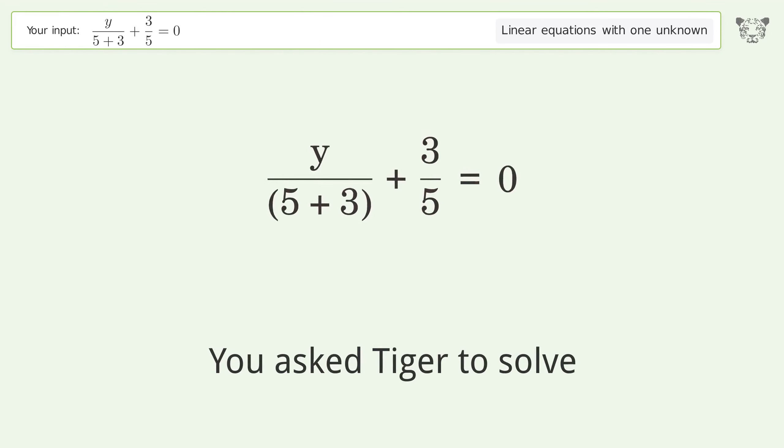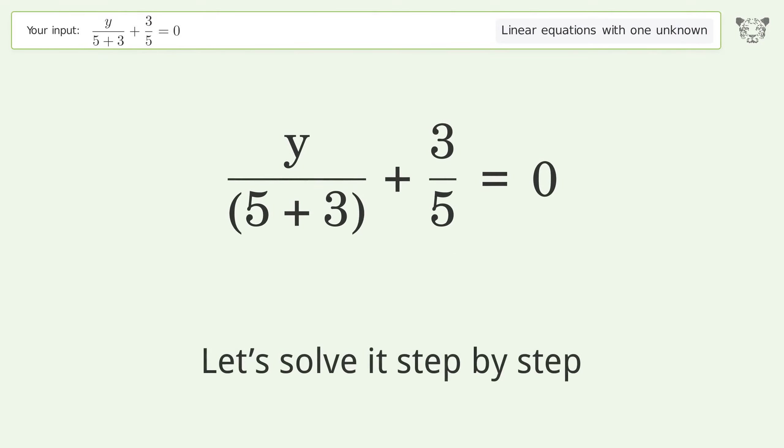You asked Tiger to solve this. It deals with linear equations with one unknown. The final result is y equals negative 24 over 5. Let's solve it step by step. Simplify the expression.